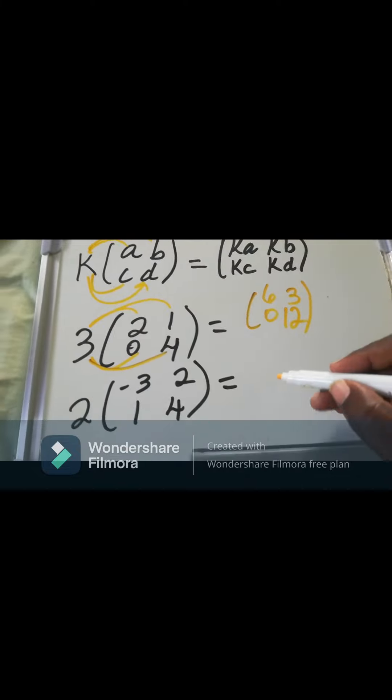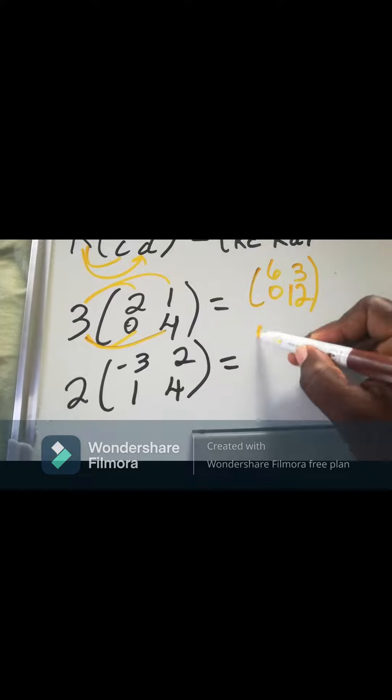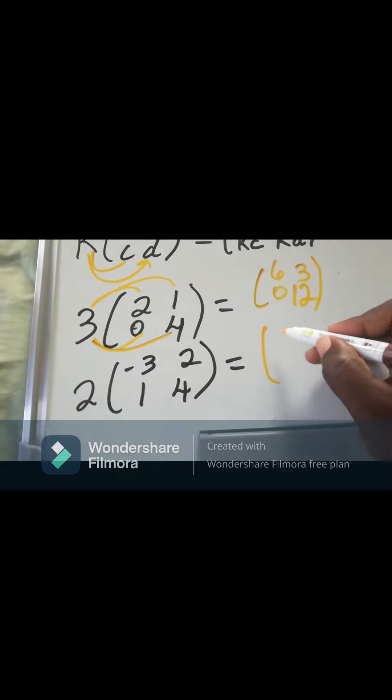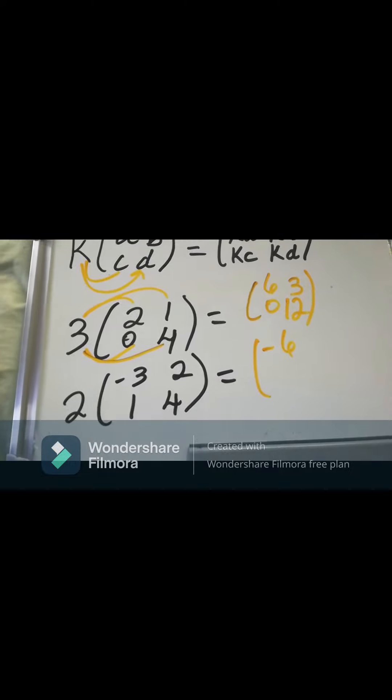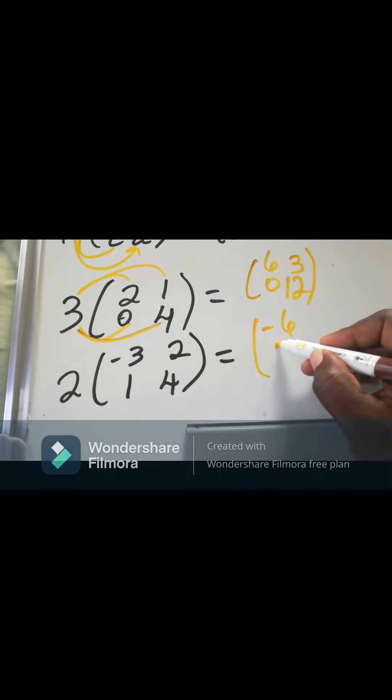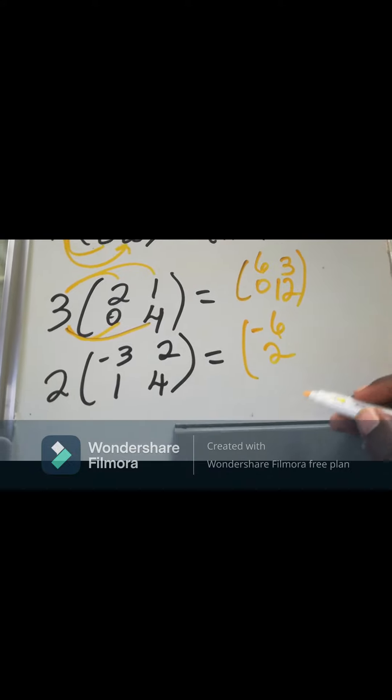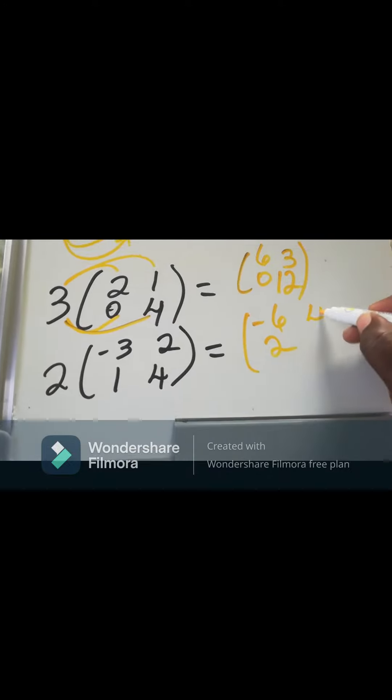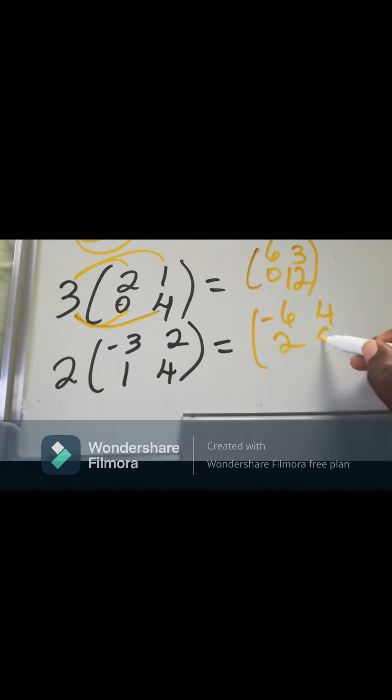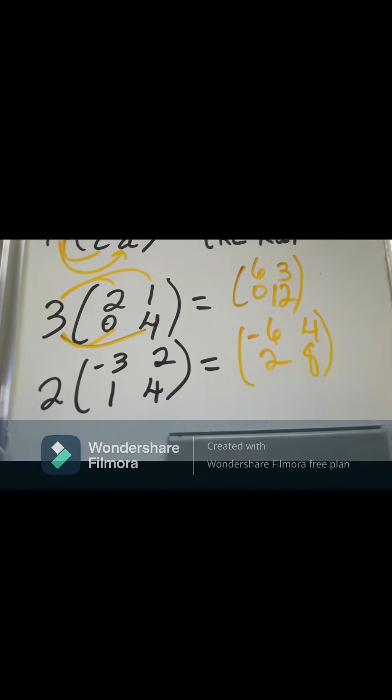So in other words, what we're saying is that to the matrix 2, 1, 0, 4, we're just going to triple everything that's inside of it. So, triple 2, you got 6. Triple 1, you got 3. Triple 4, you got 12.